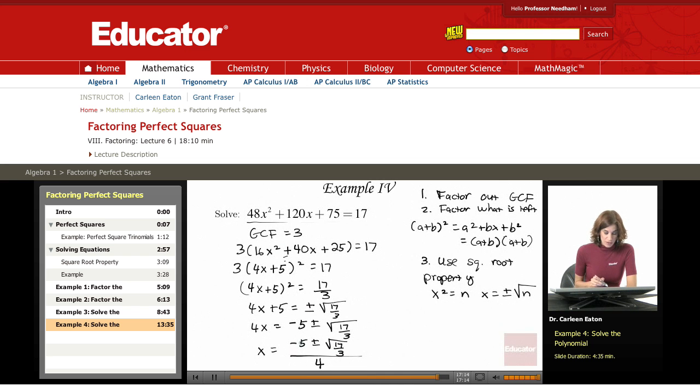And you could have written out minus 5 plus the square root of 17 divided by 3 over 4, and then had a separate expression, minus 5 minus the square root of 17 over 3 over 4. But this shorthand makes it quicker and easier. You just have to write everything once.